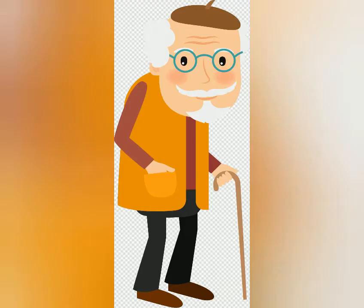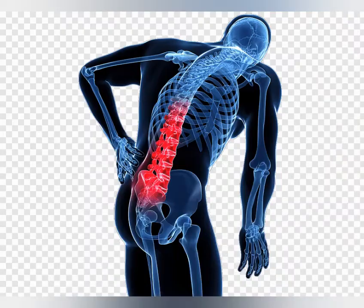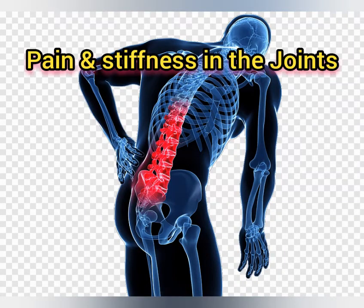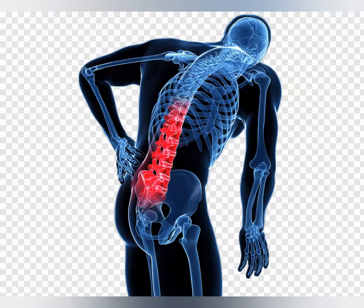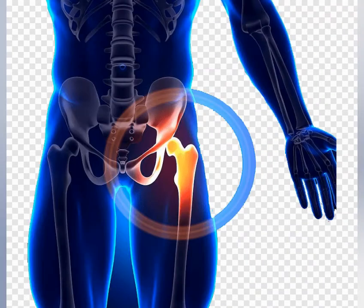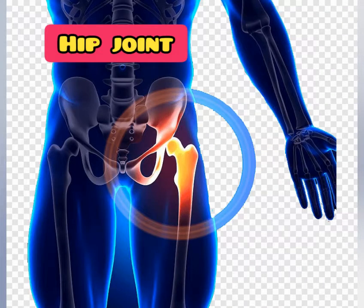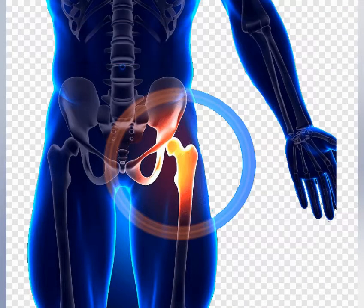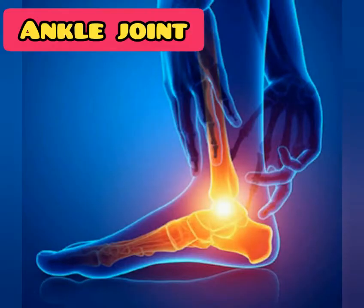Similar to osteoporosis, arthritis is very common in old age and in women. It is characterized by pain and stiffness in the joints. The parts that may feel pain and stiffness include the hip joint and ankle joint, which bear the weight of the body.